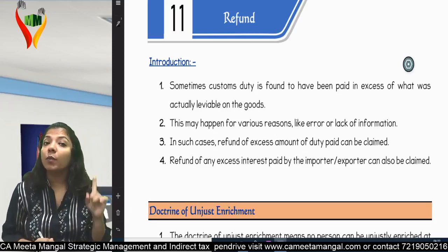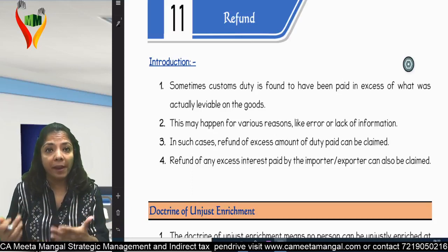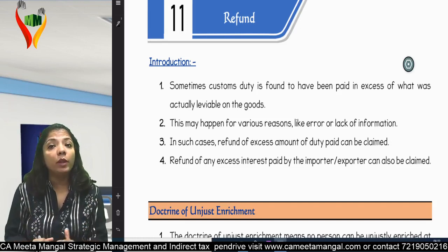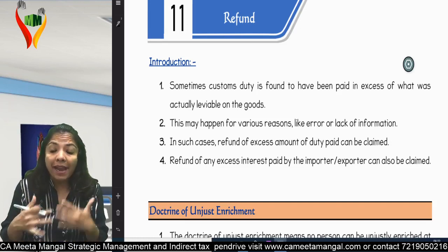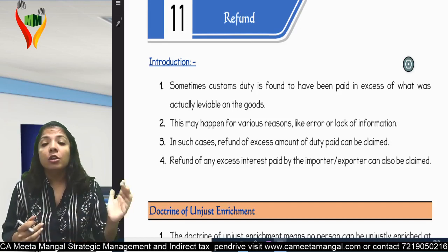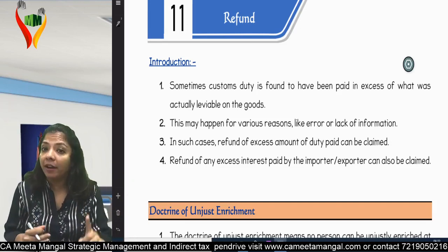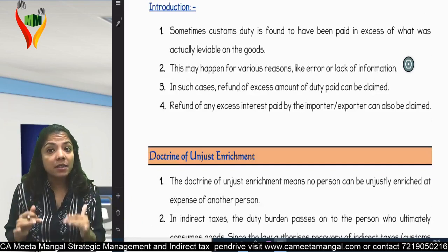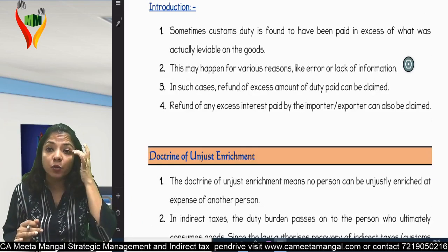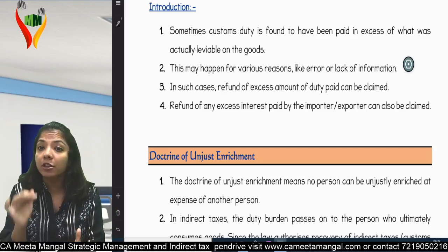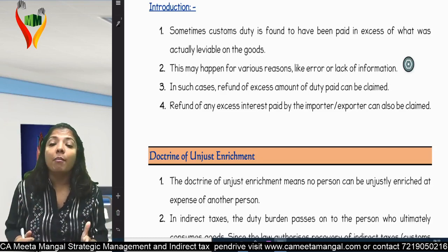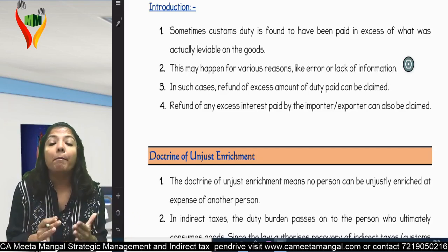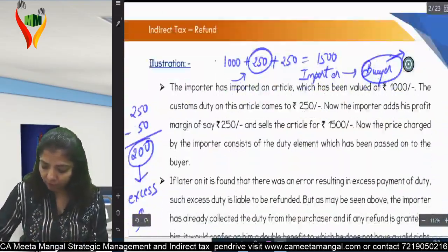Now let's talk about refund of excess amount of duty paid. Normally in taxation, you don't get a refund because it's hard to identify who actually paid the tax. So normally this amount goes to the Consumer Welfare Fund — this is called the doctrine of unjust enrichment. However, we have studied certain situations which are exceptions to this doctrine, where the amount will be received by the person who paid the tax or by the importer, and will not go to the Consumer Welfare Fund.